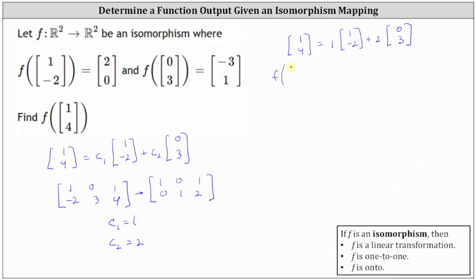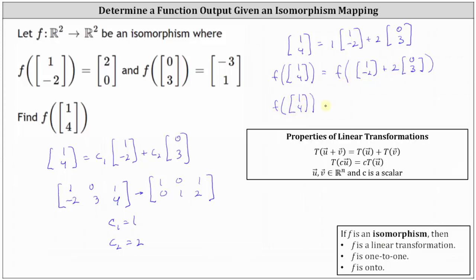So we have F of the left side must equal F of the right side. Dropping the scalar of one, we have F of the vector (1, -2) plus 2 times the vector (0, 3). Using the properties of linear transformations, we write the right side as a sum of two functions and factor out the two: F of the vector (1, 4) equals F of the vector (1, -2) plus 2 times F of the vector (0, 3). We know both F of (1, -2) and F of (0, 3).